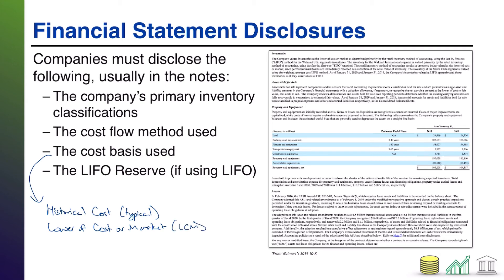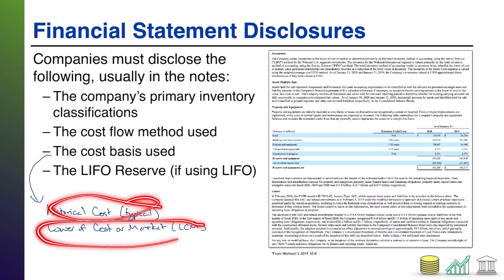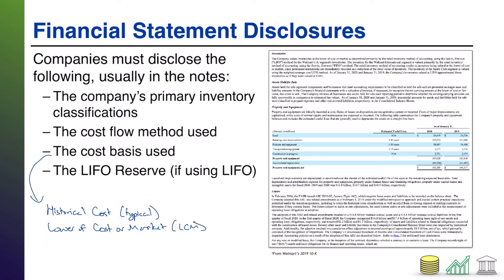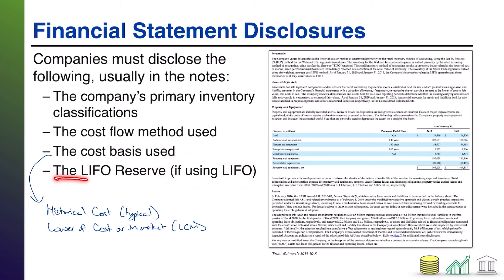The lower of cost or market rule means that if the market value of inventory falls below its historical cost, companies will mark that inventory down so they're not overstating it. You have to disclose whether your inventory is still at historical cost or whether you're applying the lower of cost or market rule.